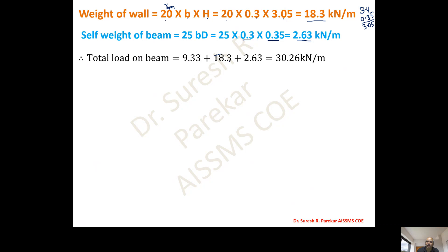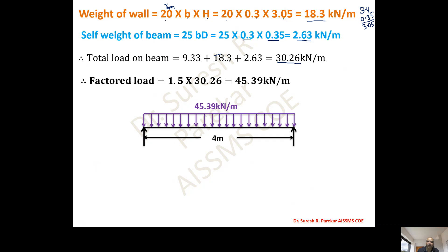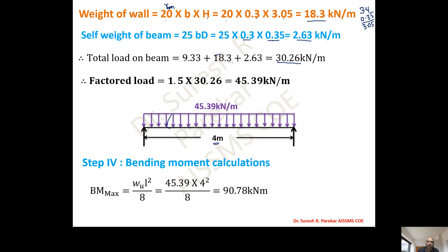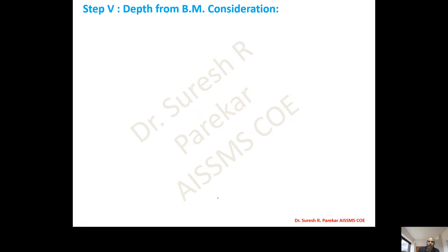Total load on beam = 9.33 + 18.3 + 2.63 = 30.26 kN/m. Factored load w_u = 1.5 × 30.26 = 45.39 kN/m. Effective span = 4 m. Bending moment: M_u = w_u·L² / 8 = 45.39 × 4² / 8 = 90.78 kN·m.